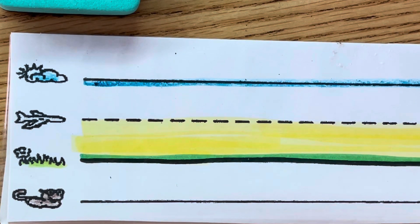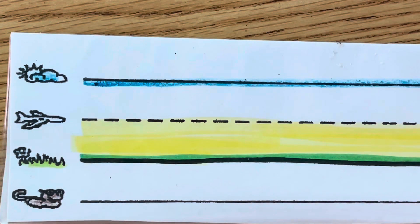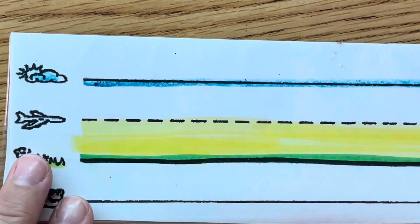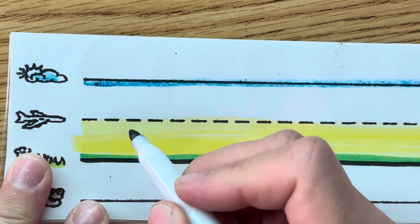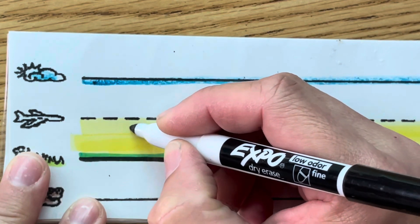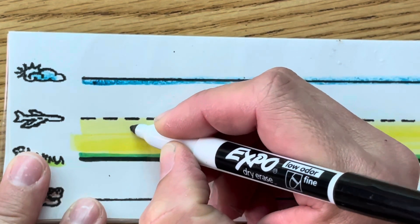Go ahead and open your marker. The first letter we're going to write is the letter S. Look where I start the letter S. The letter S starts just below the dots in the yellow part.